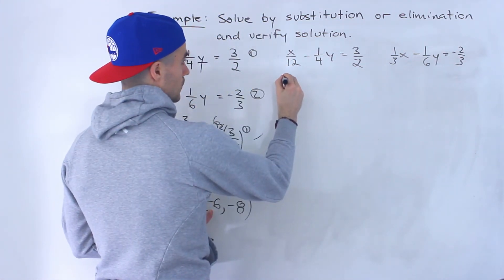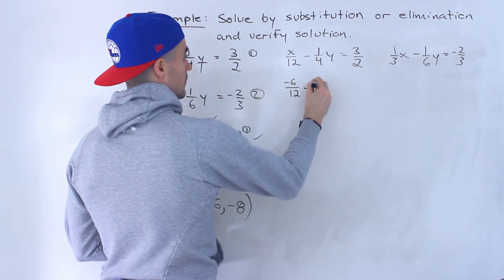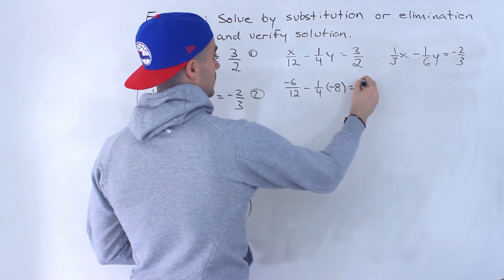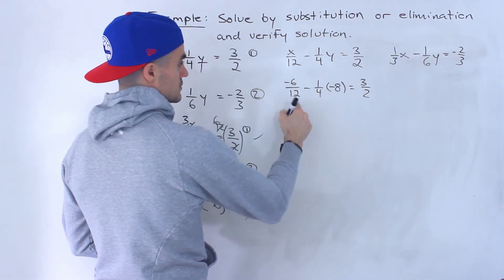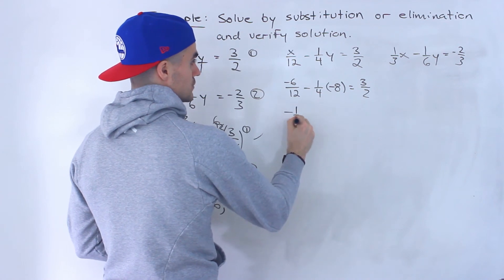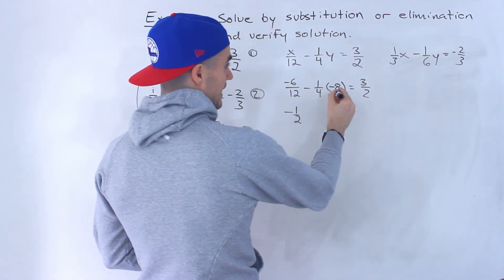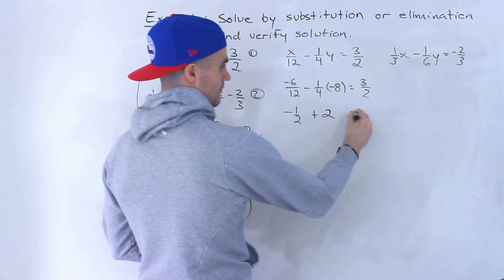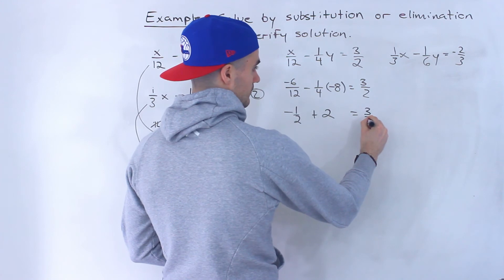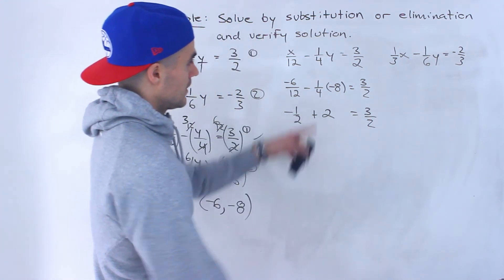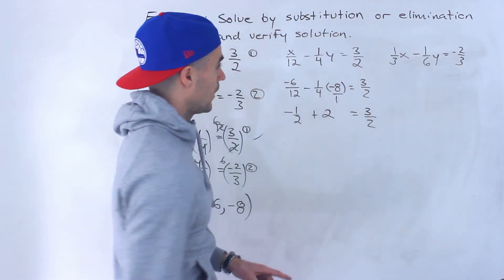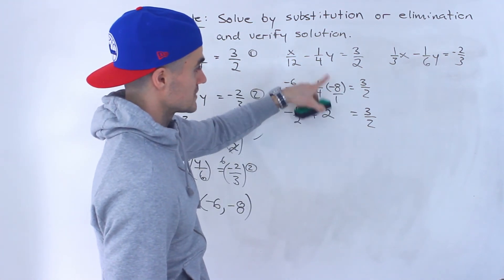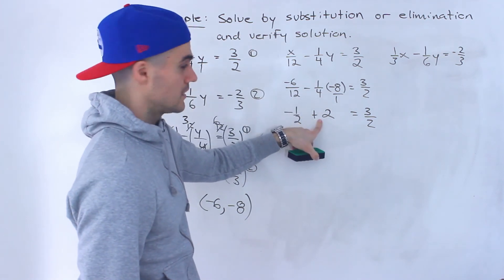Plug in negative 6 for x. So we'll have negative 6 over 12 minus 1 over 4. Negative 1 over 4. Negative 1 over 4 times negative 8 would give us a positive 2. Right? This negative 8 is like over 1. So we'd end up with negative 8 over 4. Which would give us negative 2 and then negative negative gives us positive 2.